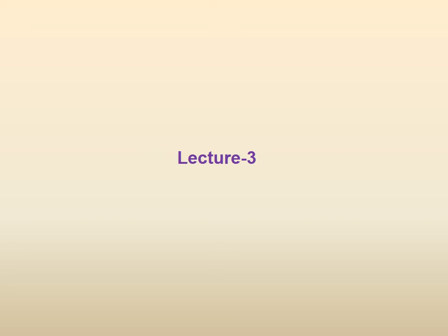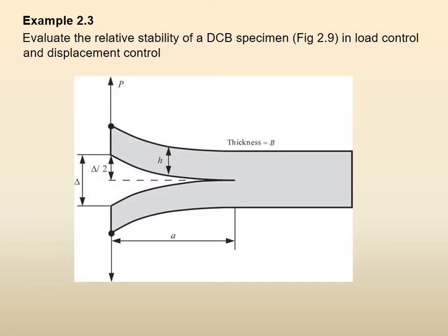Now we start with the new lecture. We have the same DCB example. It was initially a notched specimen being pulled under mode one loading, creating a total displacement delta under a total load P. If we divide this centrally into two pieces, each piece — for example the bottom piece — is a normal cantilever beam: supported at one end and being bent at the other. The displacement is delta/2, the length is a, and the height is h.